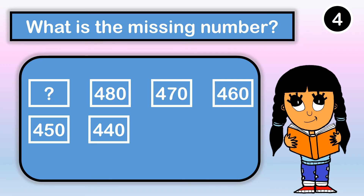Do you see the missing number for this one? We have our missing number first, then four hundred eighty, four hundred seventy, four hundred sixty, four hundred fifty, four hundred forty. It looks like we are skip counting by ten. So our missing number is four hundred ninety.